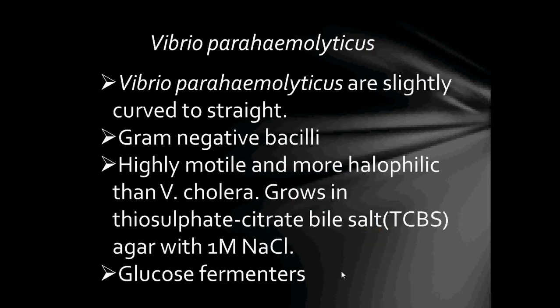Next bacteria: Vibrio parahaemolyticus. Vibrio parahaemolyticus are slightly curved to straight, gram-negative bacilli. They are highly motile and more halophilic than Vibrio cholerae. They are grown on thiosulfate citrate bile salt agar with an additional one molar of sodium chloride. They are glucose fermenters.